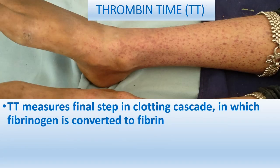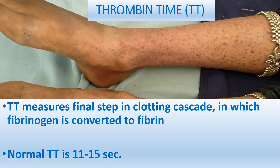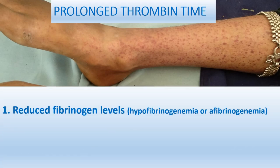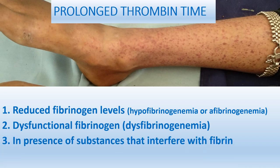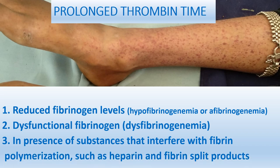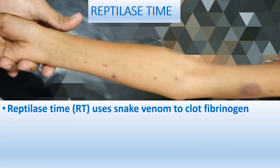Thrombin time measures the final step in the clotting cascade, where fibrinogen is converted to fibrin. Normal TT is 11 to 15 seconds. Prolonged TT is seen with reduced fibrinogen level — hypofibrinogenemia, afibrinogenemia, or dysfibrinogenemia — or in the presence of substances that interfere with fibrin polymerization, such as heparin or fibrin split products. To differentiate fibrinogen deficiency or dysfunction from heparin effect, perform the reptilase time.